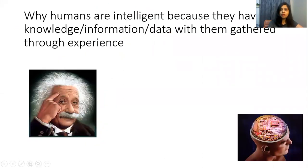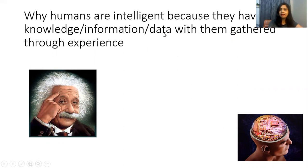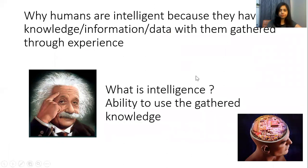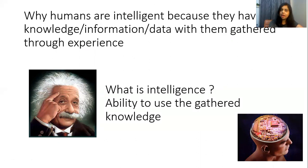Why are humans intelligent? You can see here Einstein — Einstein was very, very intelligent. Why are humans intelligent? Because they have knowledge, information, and data gathered throughout their experience. Ability to use gathered knowledge is intelligence.